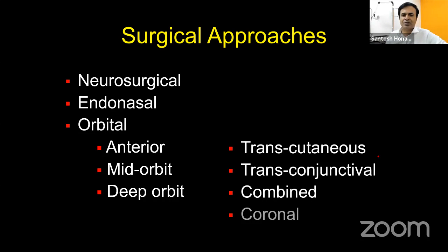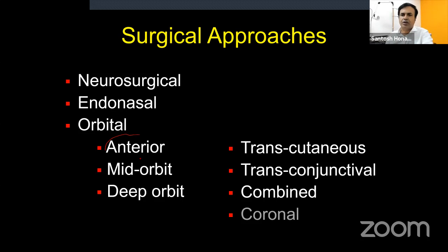The audience includes residents, fellows, and experienced orbital surgeons, so I'll present some theory first to provide a foundation, then bring clarity through practical aspects. In the orbit, the approach depends on whether the lesion is anterior, mid-orbit, or deep orbit. Anterior orbitotomy is a classic approach with four options: transcutaneous, transconjunctival, combined, and coronal.